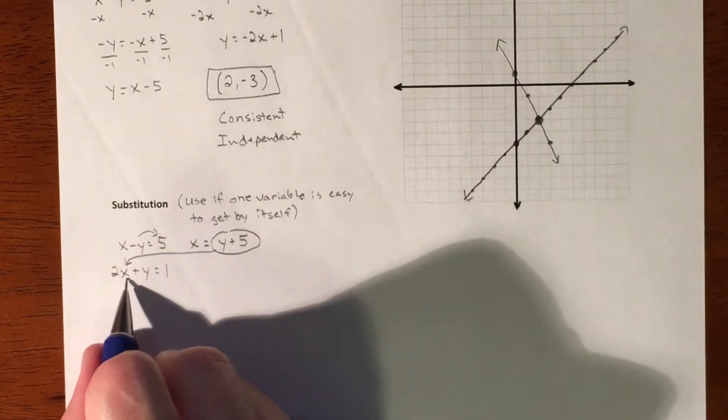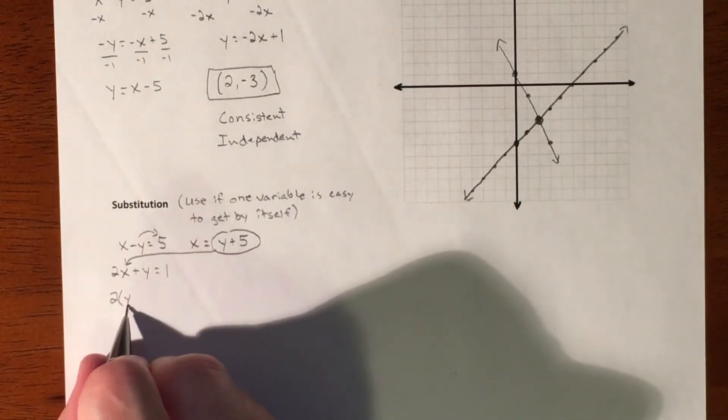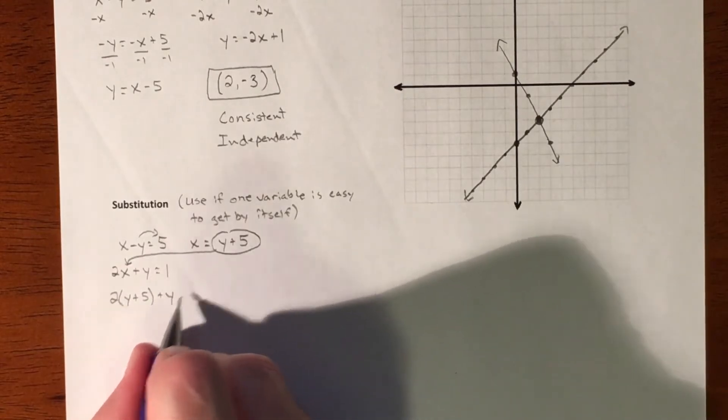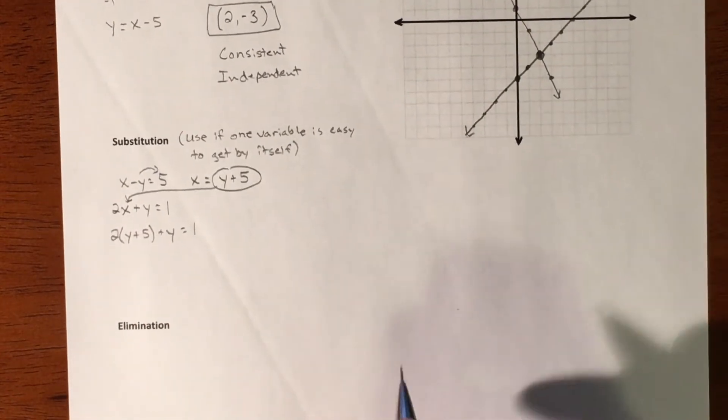So if we know what x equals, we can substitute that in for right there. So instead of it being x, it's going to be y plus 5 because that's what x equals. So that's the idea of substitution. It's called substitution because we're going to substitute one of the variables with a value because we know what the value is.